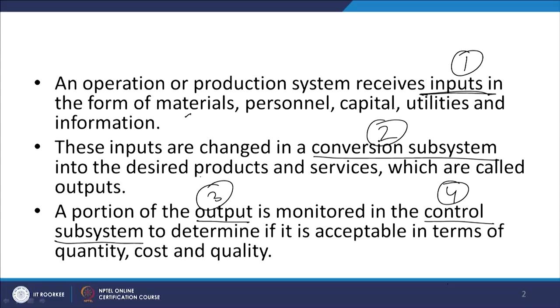Then utilities — the most important utility for any manufacturing system is energy and water. Without energy and water, a manufacturing system cannot work. Some may think utilities can be part of material, but since the share of utilities is so high, it is advisable to study them separately as a support system. They are not an actual component of your finished product, but utilities are essential to produce it. Without energy, your machines will not work, yet energy is not part of your final product. Therefore, we discuss utilities as a separate input.